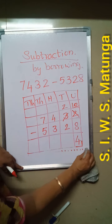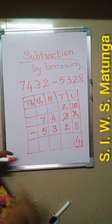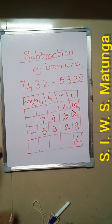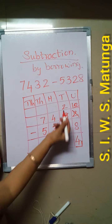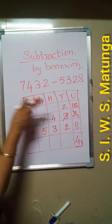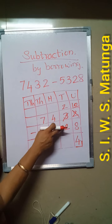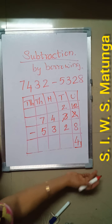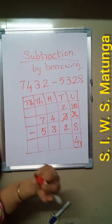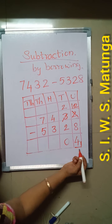Now take the tens place. Here the tens digit of the first number is now 2 (after borrowing), and the tens digit of the second number is also 2. 2 minus 2 equals 0.